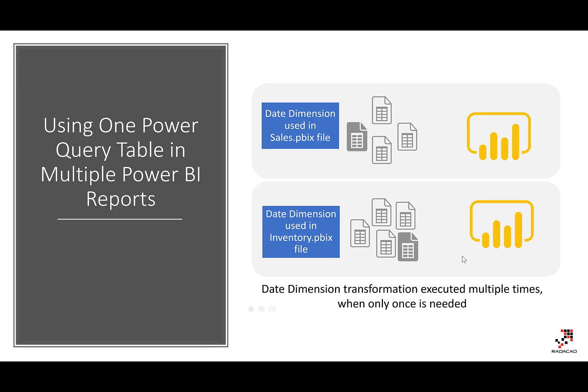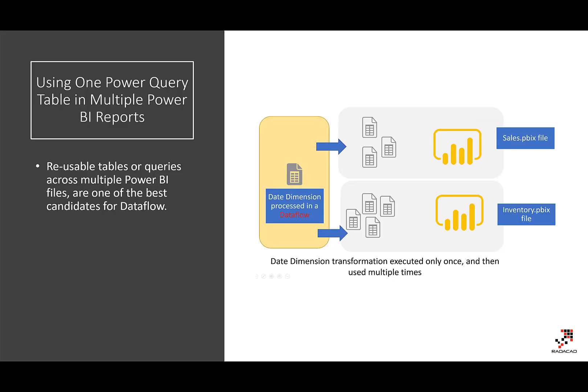When you have one table used across multiple sources and you've built that table through Power Query with 10 or 20 steps, you go to the Power Query Advanced Editor, copy the script, go to the second file, paste it there — and now your source code is spread across two different files. After a couple of weeks you have a third file, so you create another copy. If you make a change in one you have to make sure you change the others too, because they are not synchronized.